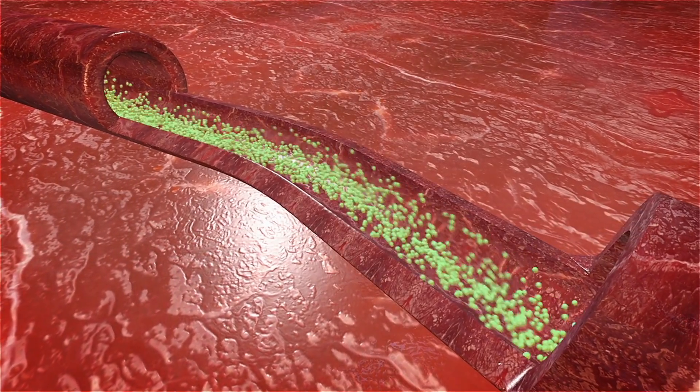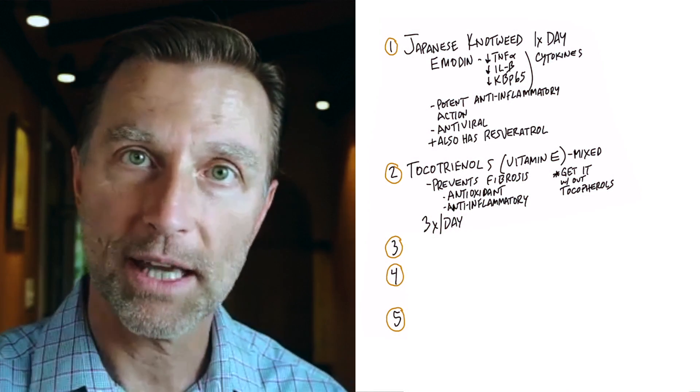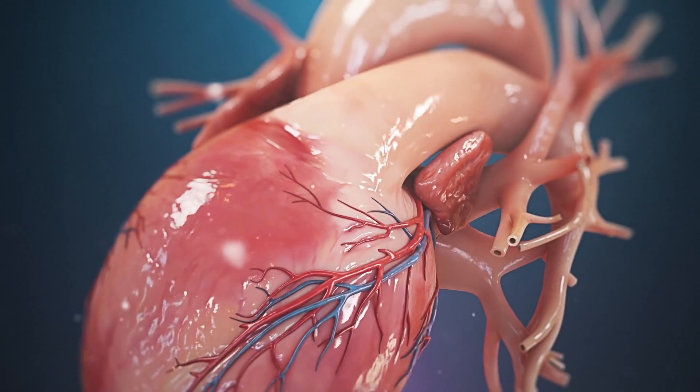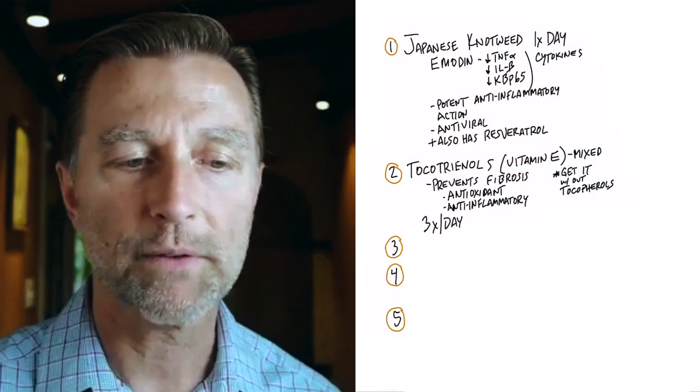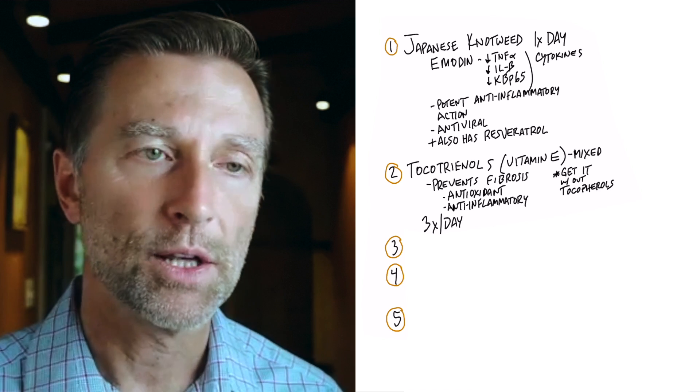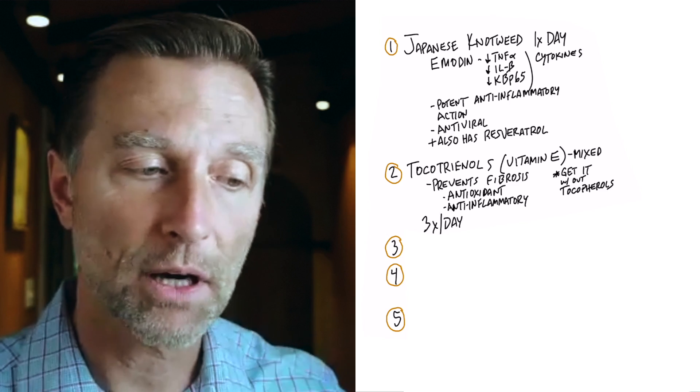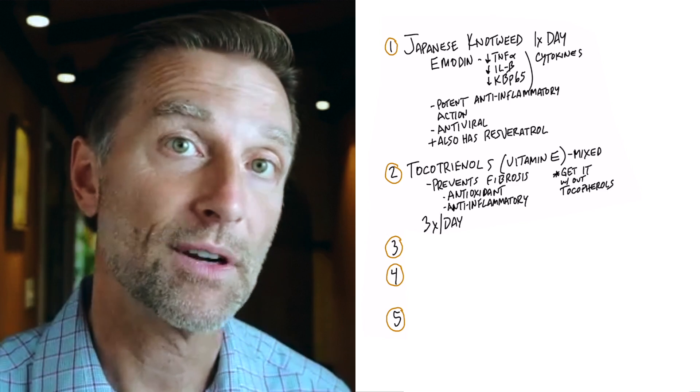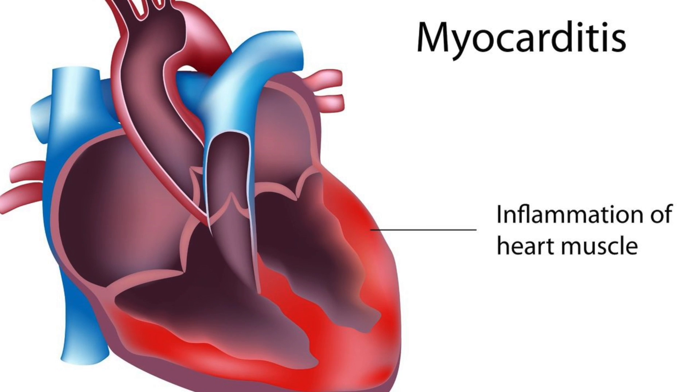And tocotrienols also has been studied on the inside of the artery as well. But in this situation, we want it to act on the heart muscle, the myocardium. The problem with mixing tocotrienols with tocopherol is they both will have a tendency to compete with each other. So we don't want that. We want the tocotrienols only without the tocopherols because tocotrienols are roughly about 50 times stronger.